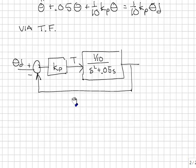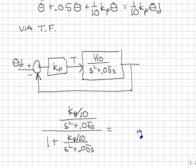We can then do the block diagram algebra on this. This is G over 1 plus G H. So we have Kp over 10 over S squared plus 0.05 S over 1 plus Kp. We simplify, and we're left with Kp over 10 over S squared plus 0.05 S plus Kp over 10.